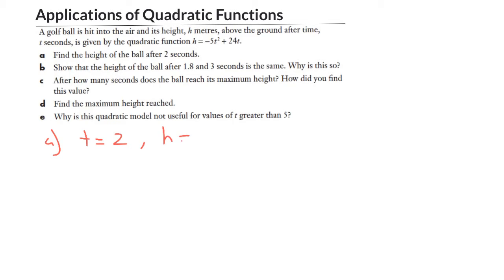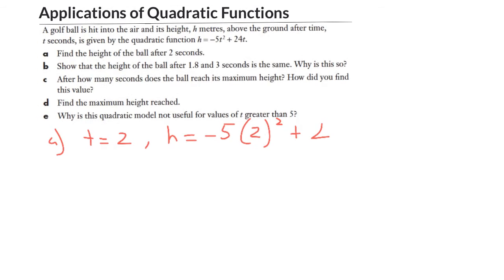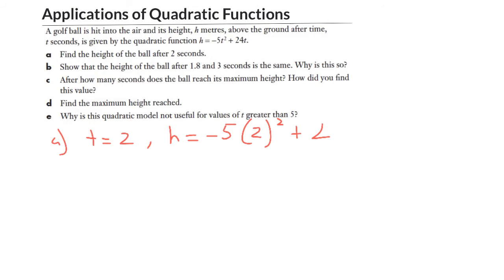So I'm going to have h equals minus 5 times 2 squared. I'm not actually squaring my negative, so it's not as important as if I was substituting negative 2, which I actually couldn't do here because time is always a positive thing. And if I go and substitute that in, I'm going to end up with h equals 28 meters after 2 seconds.